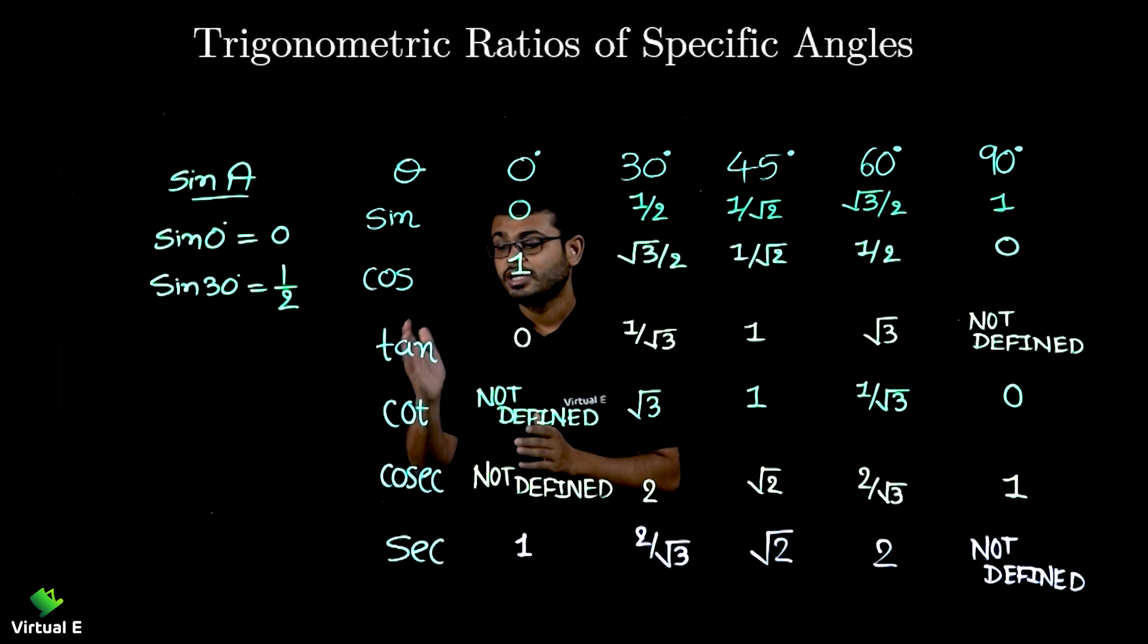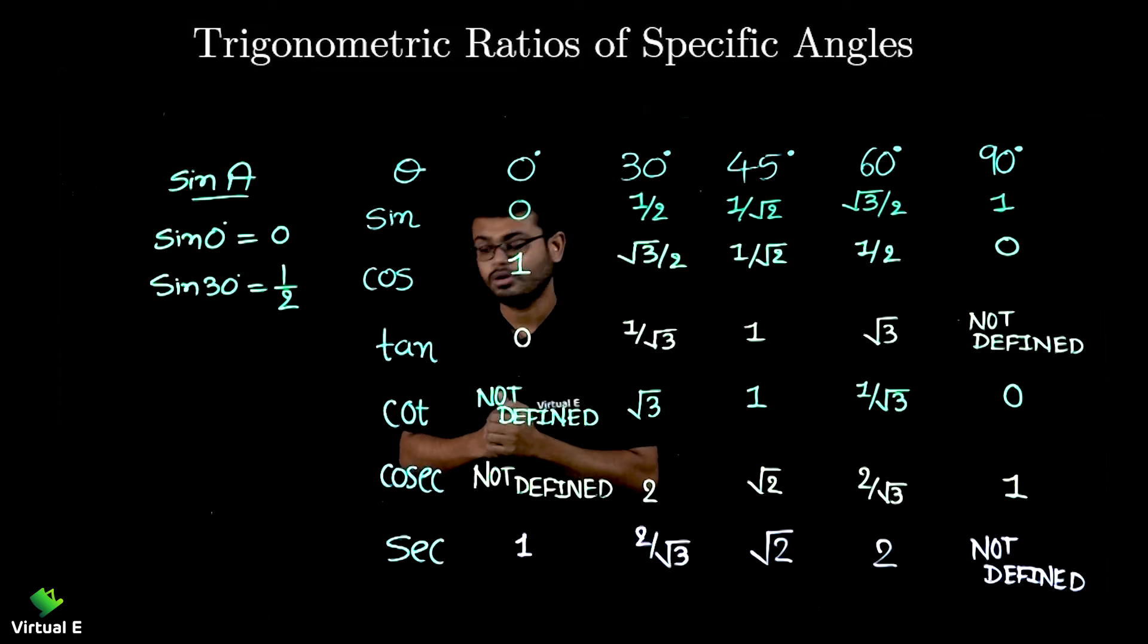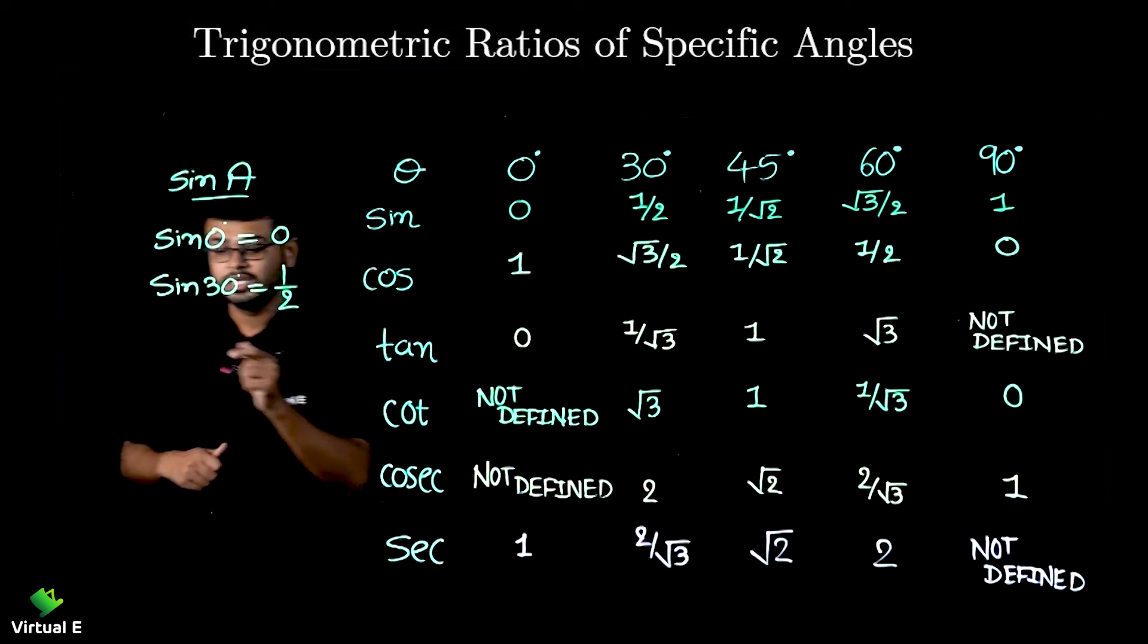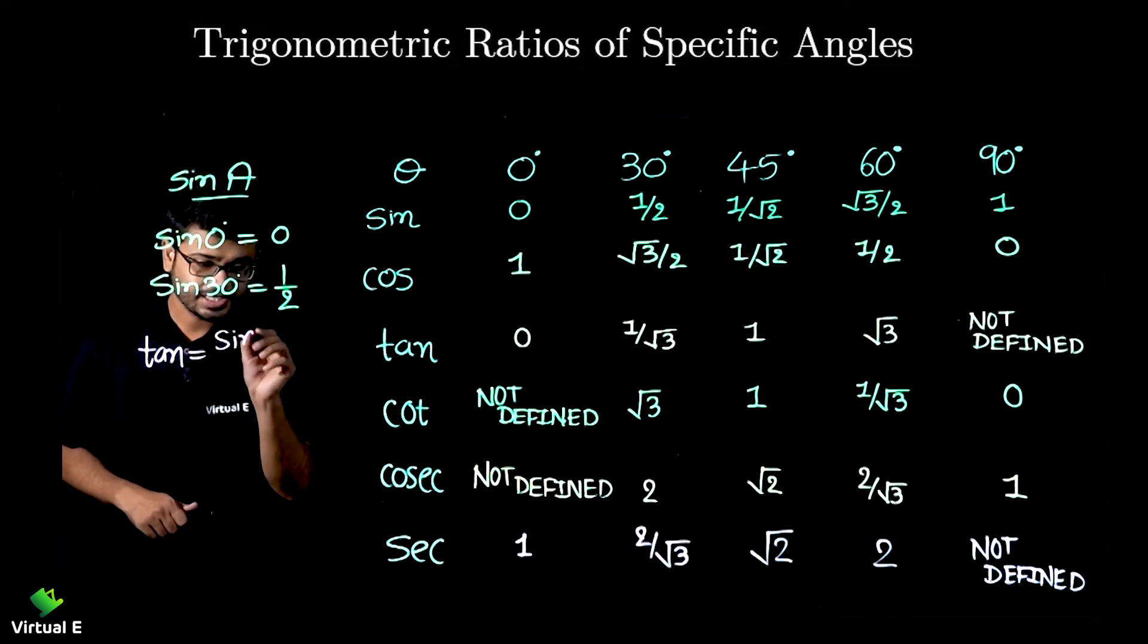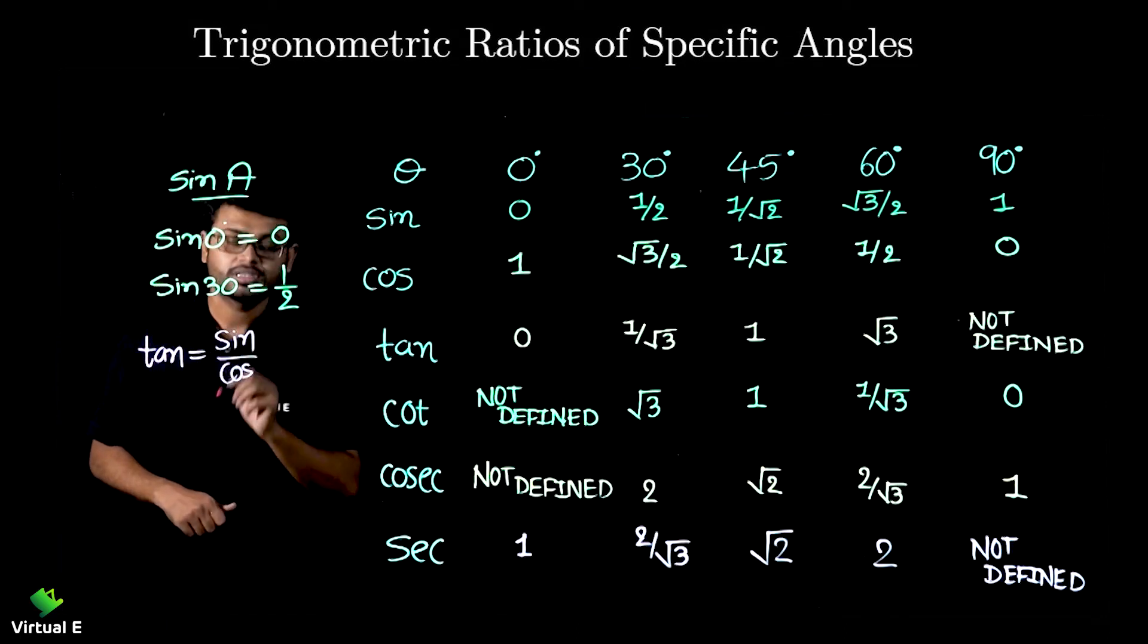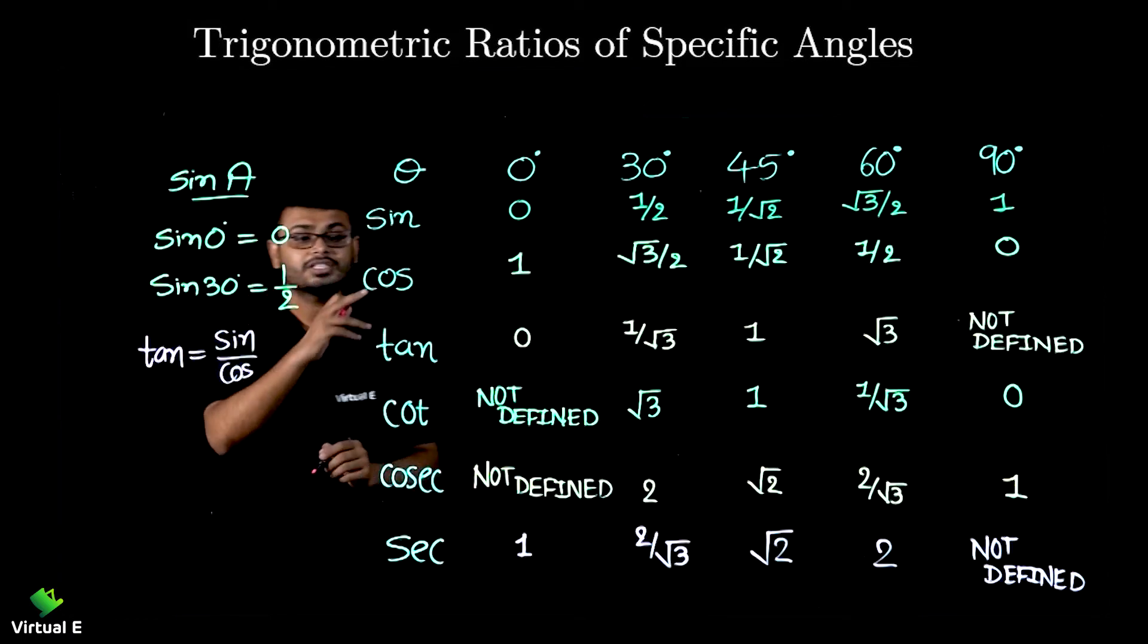Then to get the tan, how you need to do? To get the tan you need to divide sine and cos. See there is one relation which is tan is equal to sine by cos.